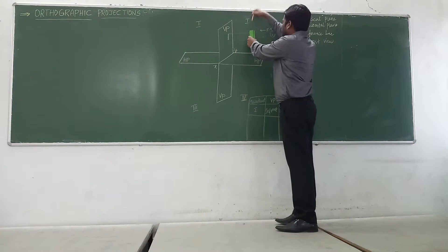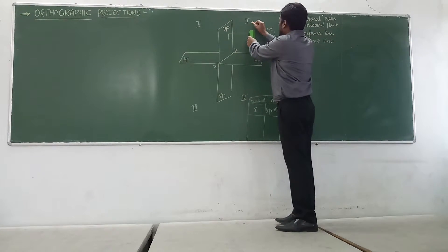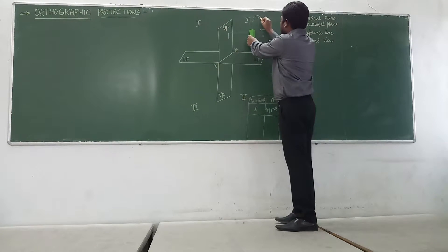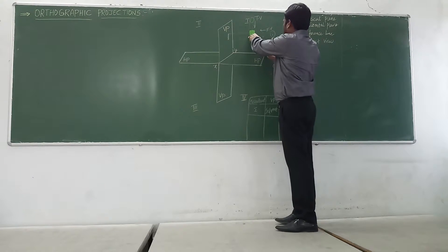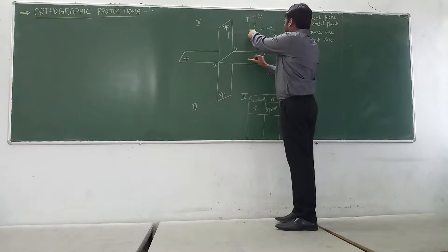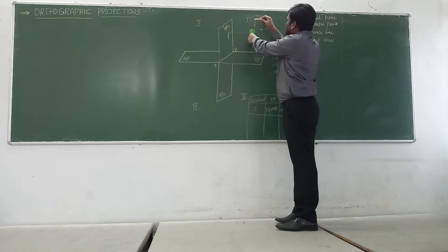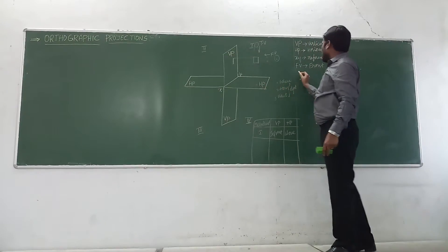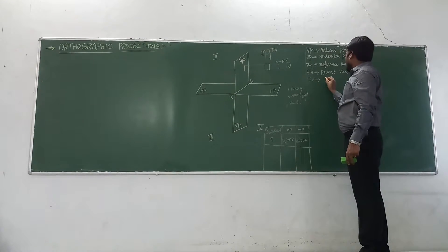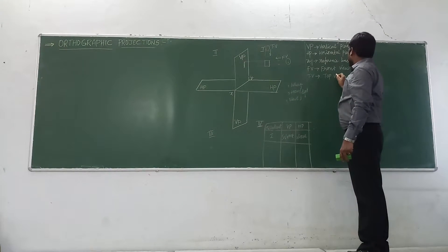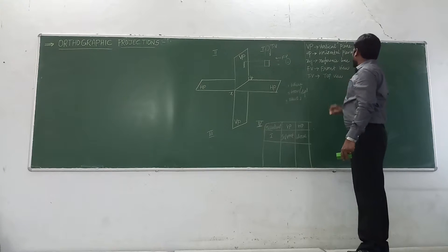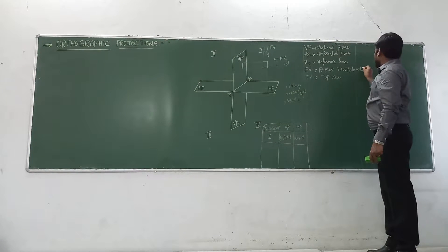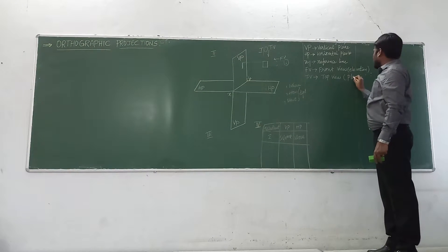The person also has to view from the top. When seeing the object from the top, the source will be above and the rays project onto the horizontal plane — that is the top view. So the front view is called the elevation. In other terms, it is called elevation. And the top view is otherwise called the plan.